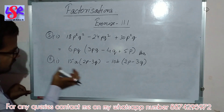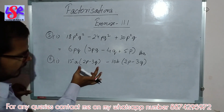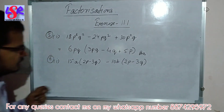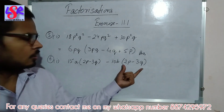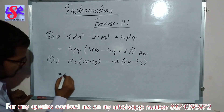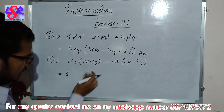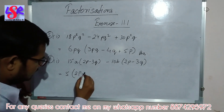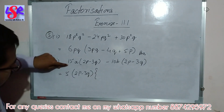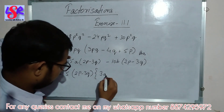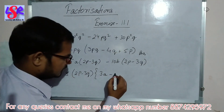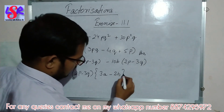Now question number 6, first part: 15a(2p - 3q) - 10b(2p - 3q). Here we see that the bracket portion (2p - 3q) is common in both terms. And from 15a and 10b we can take 5 as common. So here we get 5 and one bracket (2p - 3q) as common. Then we are left with 3 and a from the first term. Then minus. Then 5 divided by the 10 gives 2, and we are left with 2b as your answer.